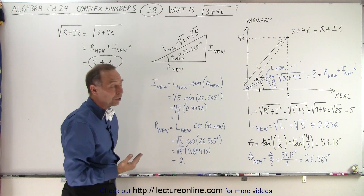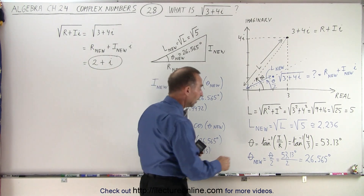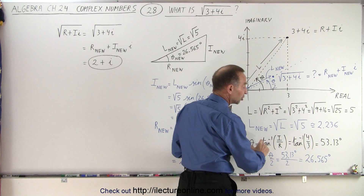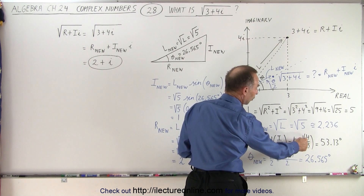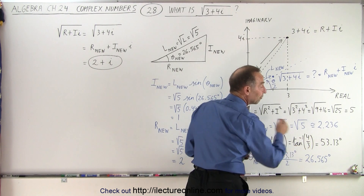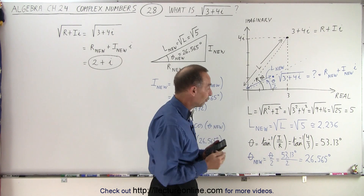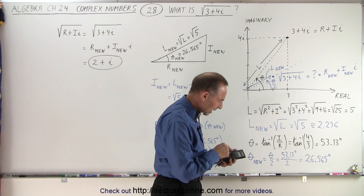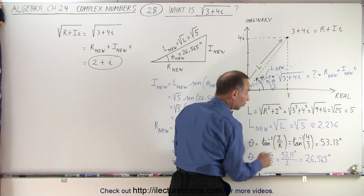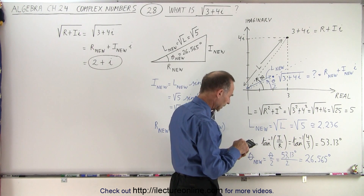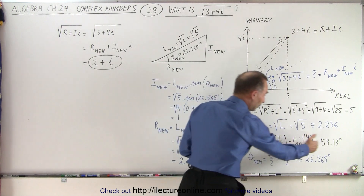Now for the angle — how do we find the angle? We need trigonometry for that. If you have a calculator that can do trigonometry, this is how we do it. The angle is what we call the inverse tangent of the ratio of the imaginary part to the real part. The imaginary part is 4, the real part is 3, so we take 4 divided by 3. You take your calculator, go 4 divided by 3, and get 1.3333. Then you hit the inverse button and the tangent button — second function or inverse function, tangent with a minus 1 exponent — and you'll end up with 53.13 degrees. If you don't know how to do that, that's fine — just realize that's how we find the angle.